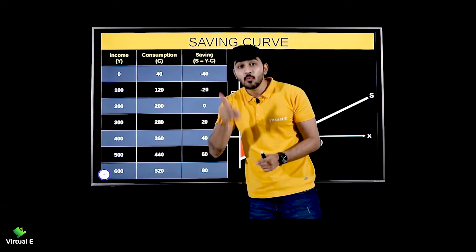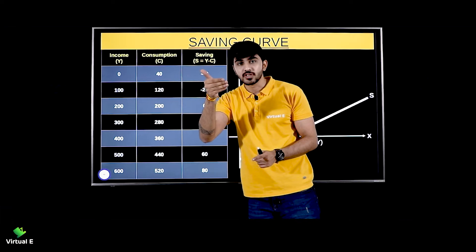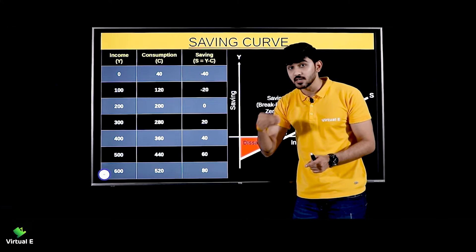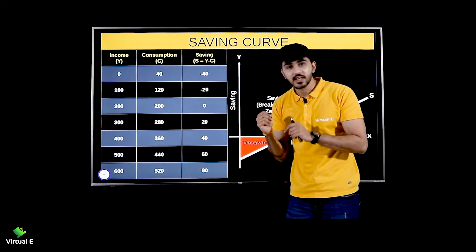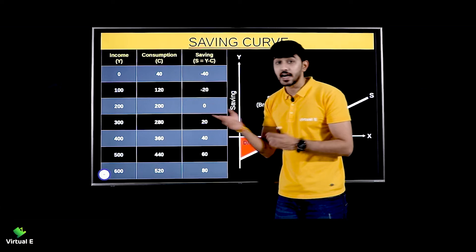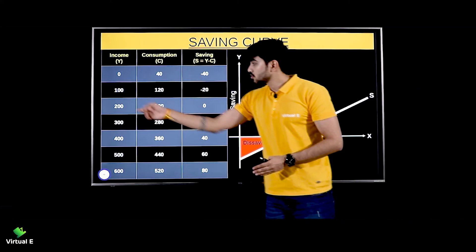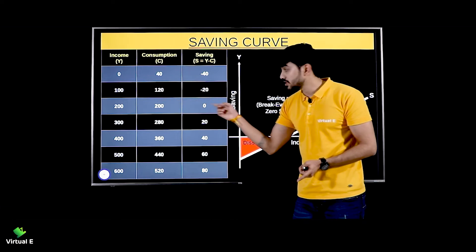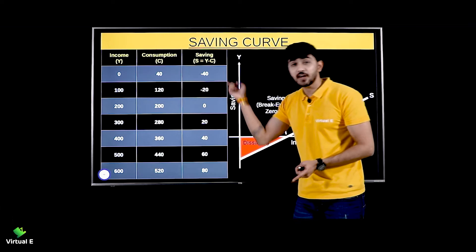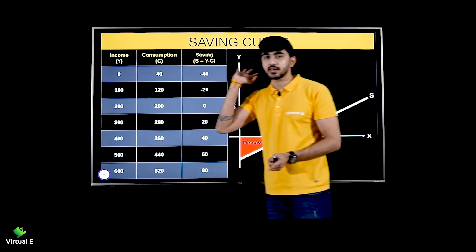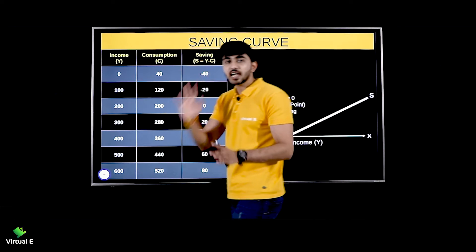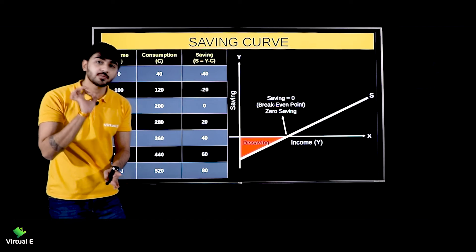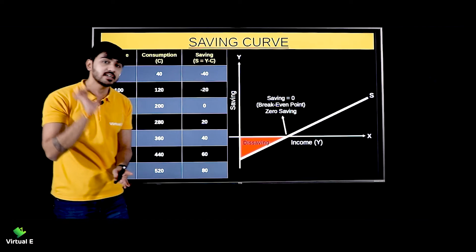Then your income increases more, but with the increase in income, your consumption also increases — because there is a direct positive relationship between them. So 200 minus 200 gives you 0. That means here finally your break-even point came — you don't save anything, but you also don't dis-save anything.